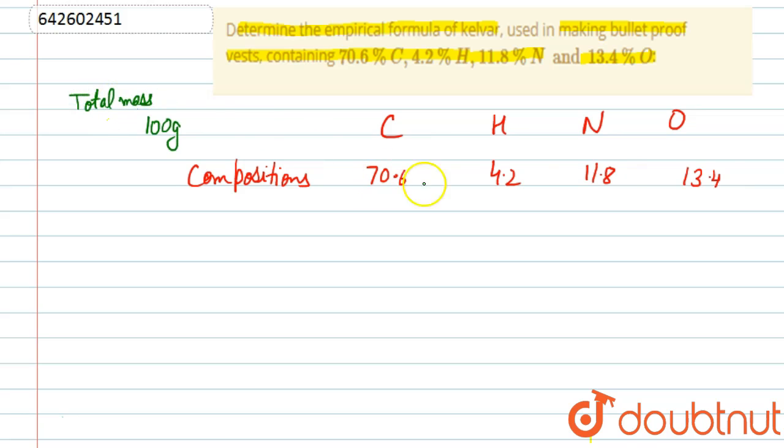So these percentages will be the given mass. We will calculate number of moles to find the empirical formula of Kevlar. Number of moles of each of the following: that will be the given weight, 70.6 divided by the atomic mass of carbon, that is 12; and hydrogen, 4.2 divided by 1; 11.8 divided by atomic mass of nitrogen, that is 14.